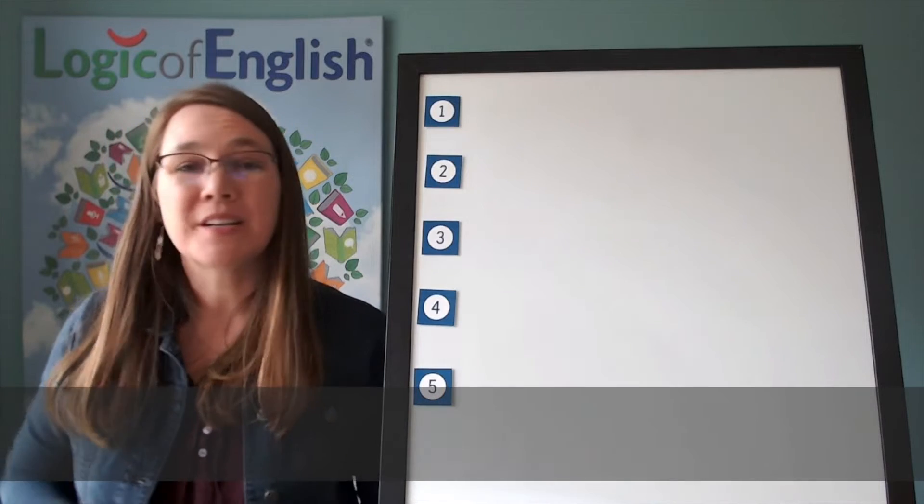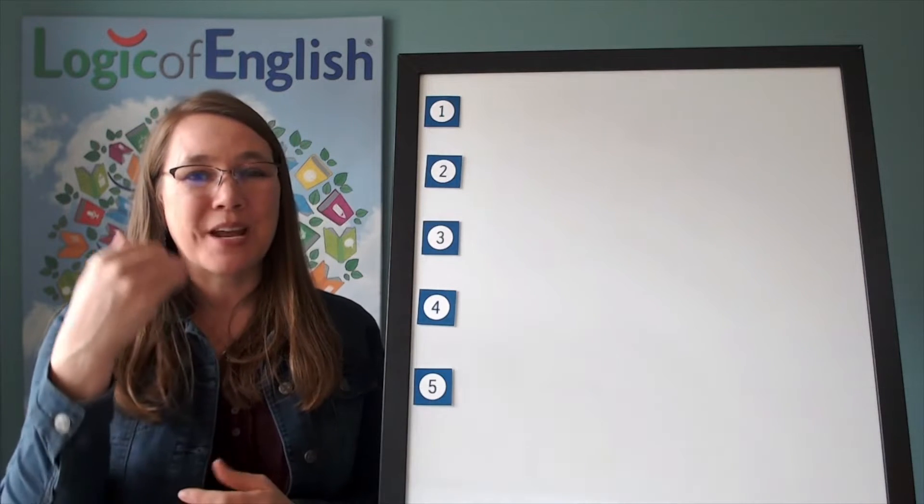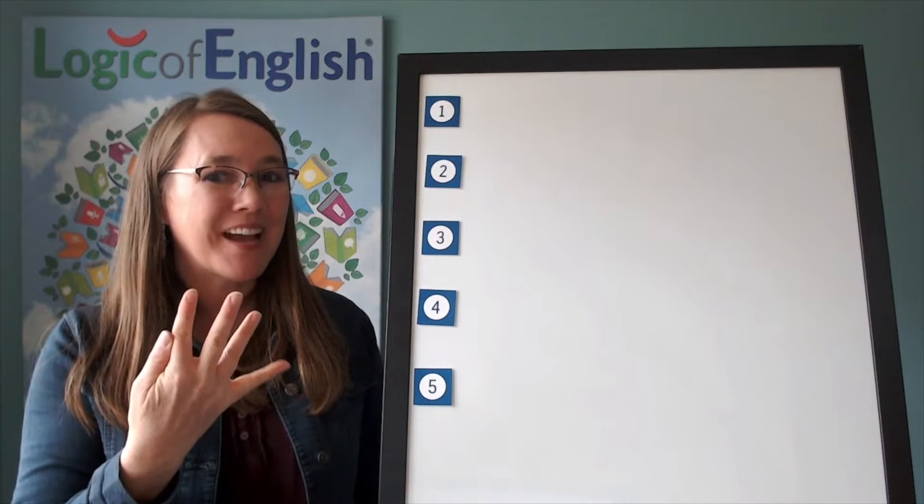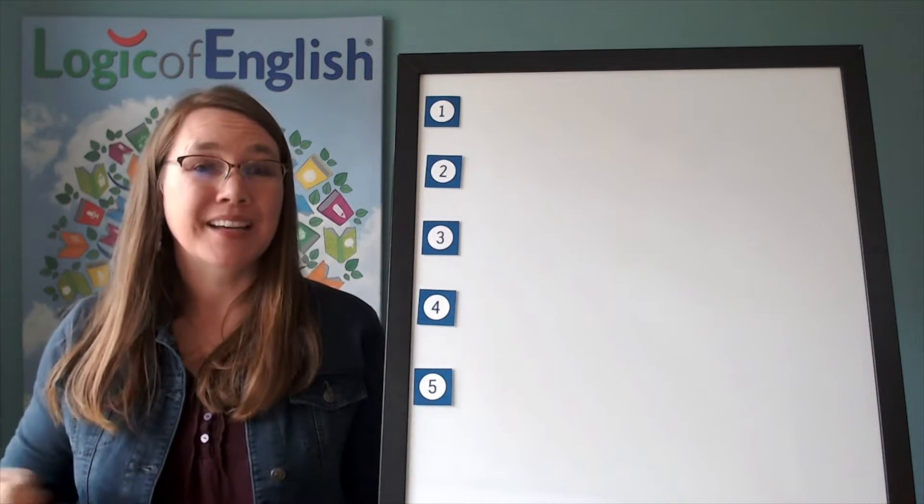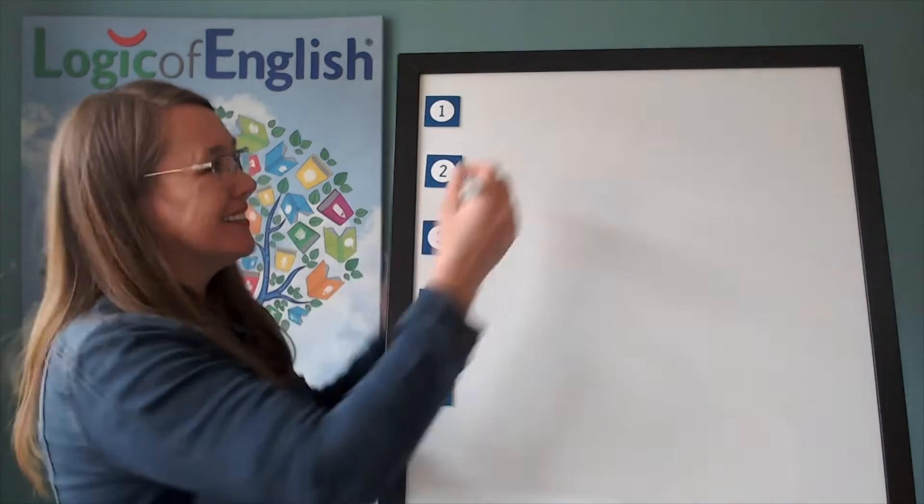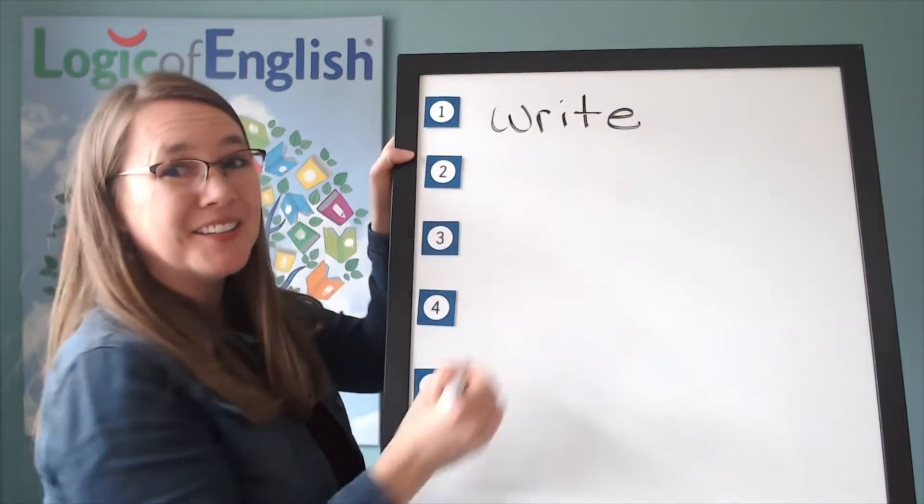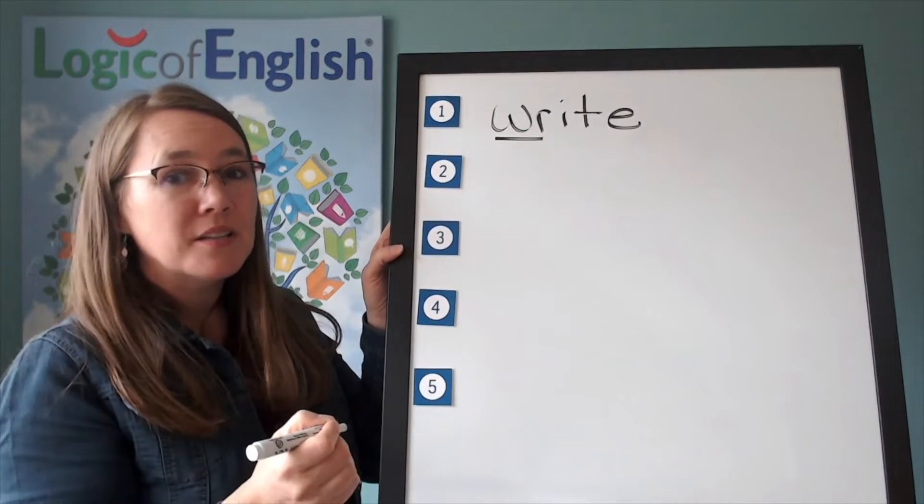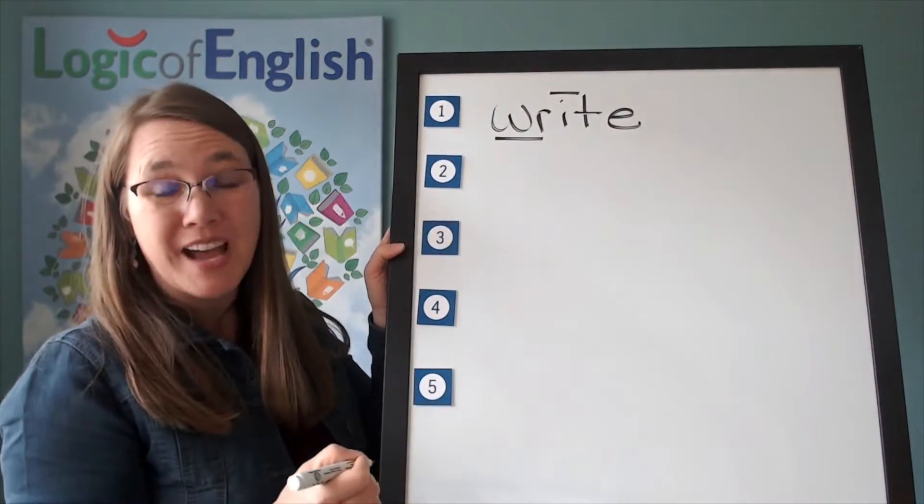Our first word is write. Please write your name at the top of the paper. Write. Go ahead and say write with me. Write. Let's sound it out. Er, i, t. Silent final e. How will we mark write? Well, underline the er. And what sound of i, i, e do we hear in write? You're right. It's the long sound of e. So we'll put a line over it.